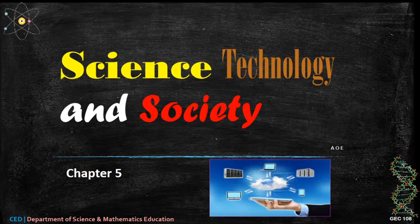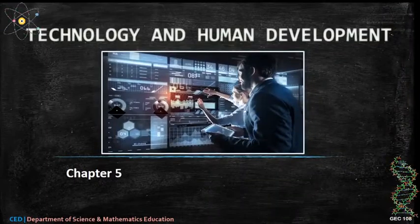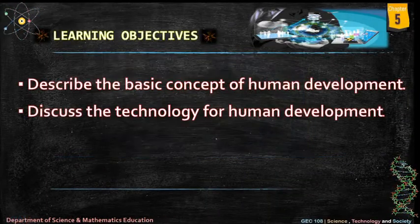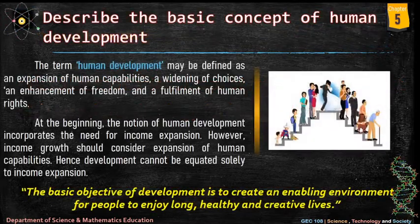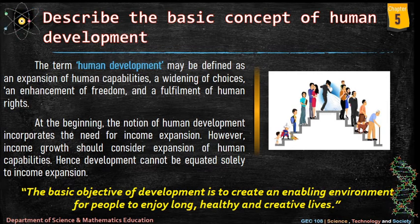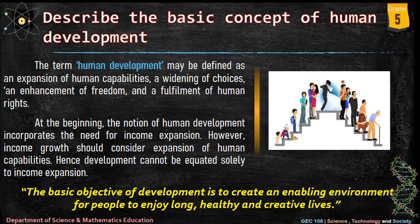Chapter 5: Science, Technology and Society — Technology and Human Development. The learning objectives are: first, describe the basic concept of human development; second, discuss the technology for human development. The term human development may be defined as an expansion of human capabilities, a widening of choices, an enhancement of freedom, and a fulfillment of human rights. The notion of human development incorporates the need for income expansion; however, income growth should consider expansion of human capabilities. Hence, development cannot be equated solely to income expansion.